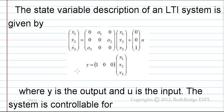The state variable description of an LTI system is given by x1' x2' x3' = [0, a1, 0; 0, 0, a2; a3, 0, 0] into [x1, x2, x3] plus [0, 0, 1] into u, and y = [1, 0, 0] into [x1, x2, x3], where y is the output and u is the input.